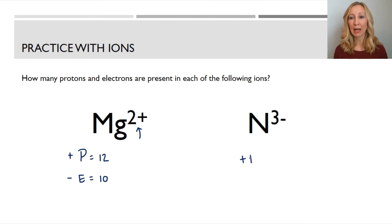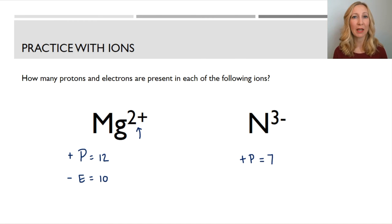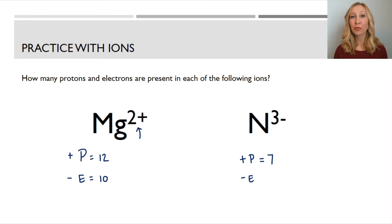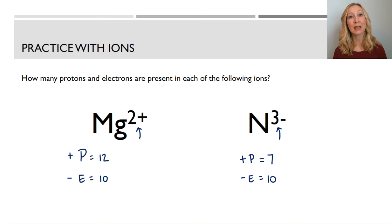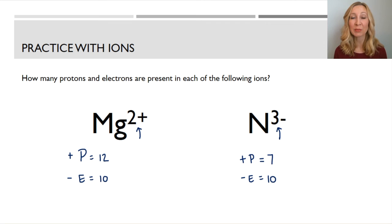Let's look at this nitrogen ion. Every nitrogen atom has the same number of protons. Nitrogen is atomic number 7 on the periodic table, so it has 7 protons. This nitrogen ion has a negative 3 charge, meaning it has 3 more negative particles than positive particles. So this ion has 7 protons and 10 electrons — it always has the same number of protons, but this nitrogen ion has 10 electrons.